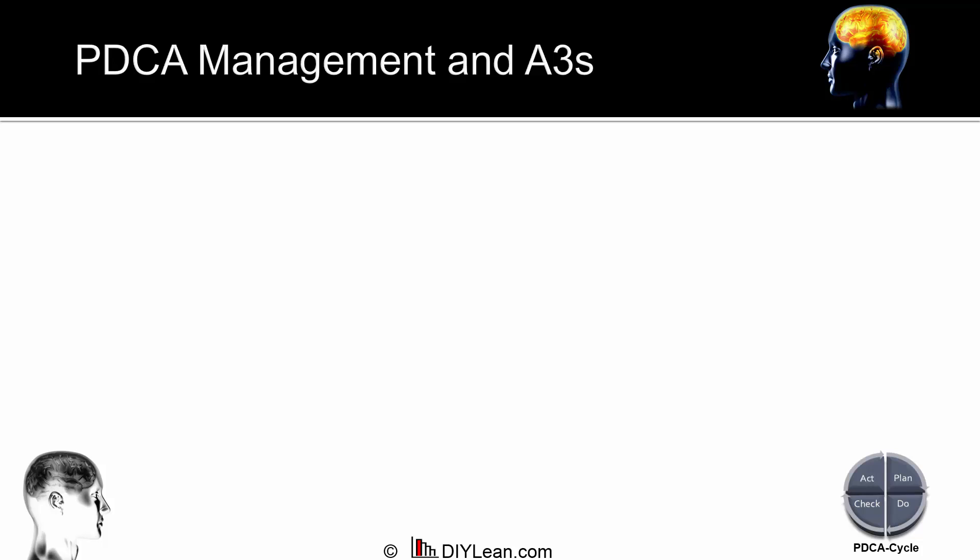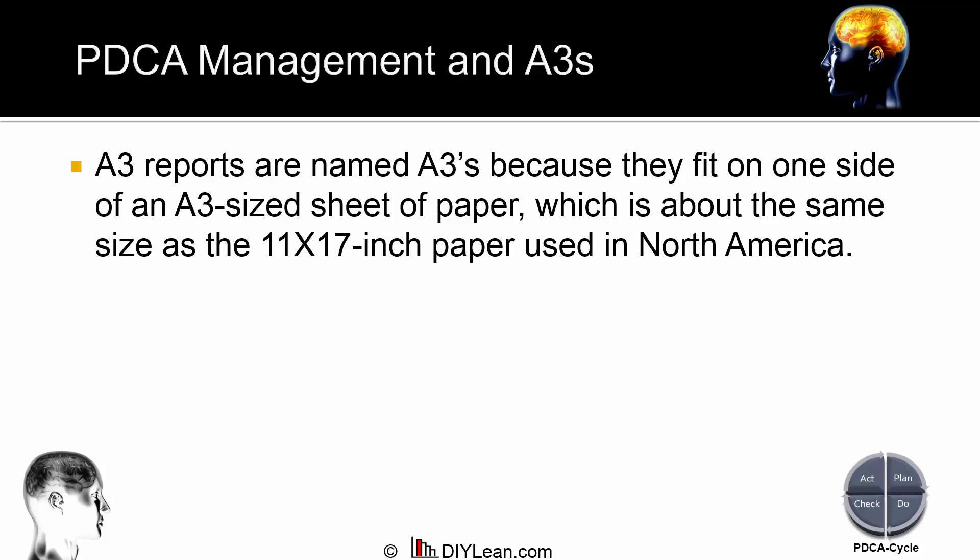Let's begin with why these are called A3 reports. A3 refers to the paper size, with the closest equivalent in North America being an 11x17 paper size. Of course, you can use whatever paper size you want. I actually like using 13x19 paper, also called A3 Plus, when I print out A3s, simply because the larger the paper size, the easier it is to see all of the information. What size you use is up to you.